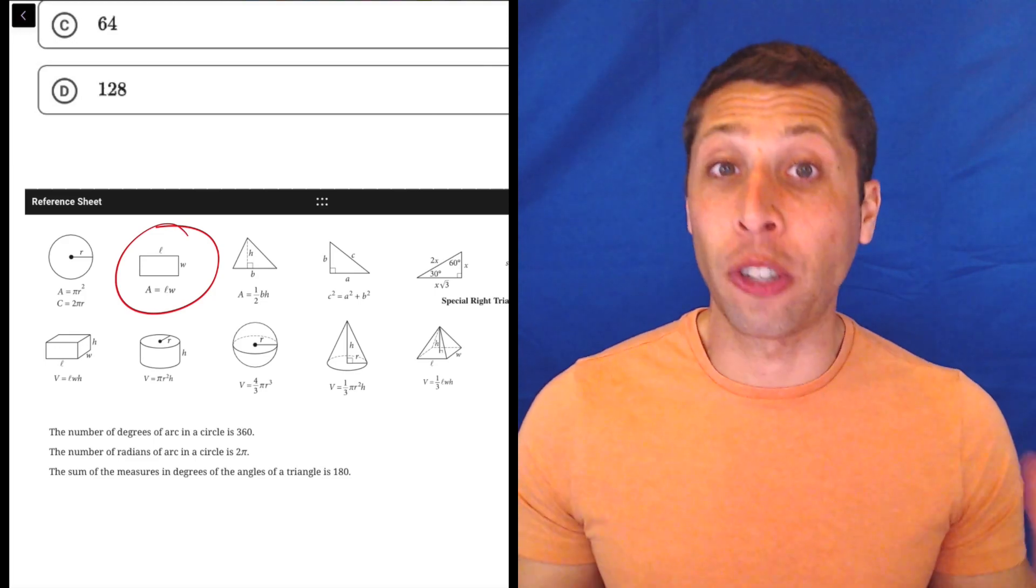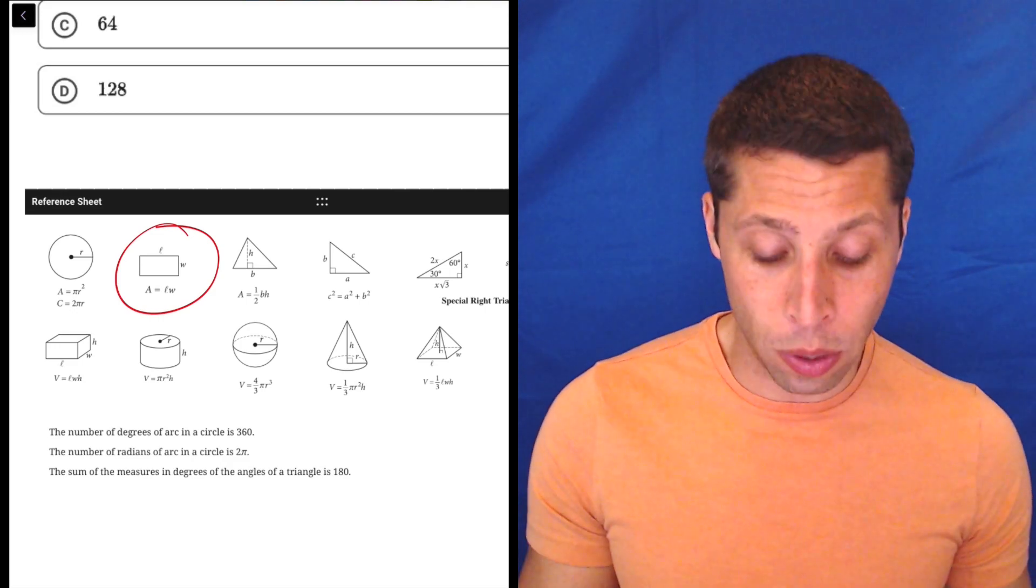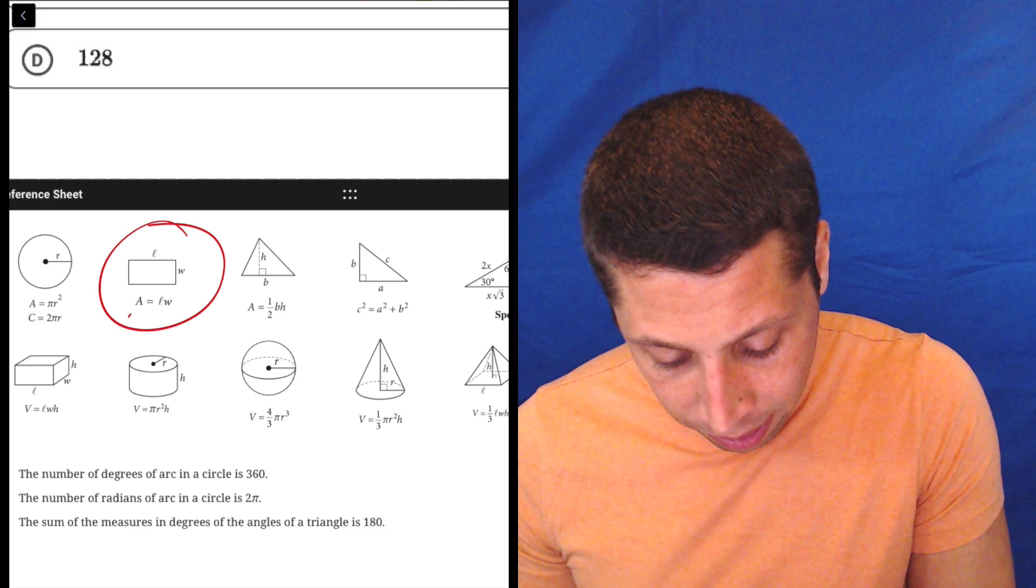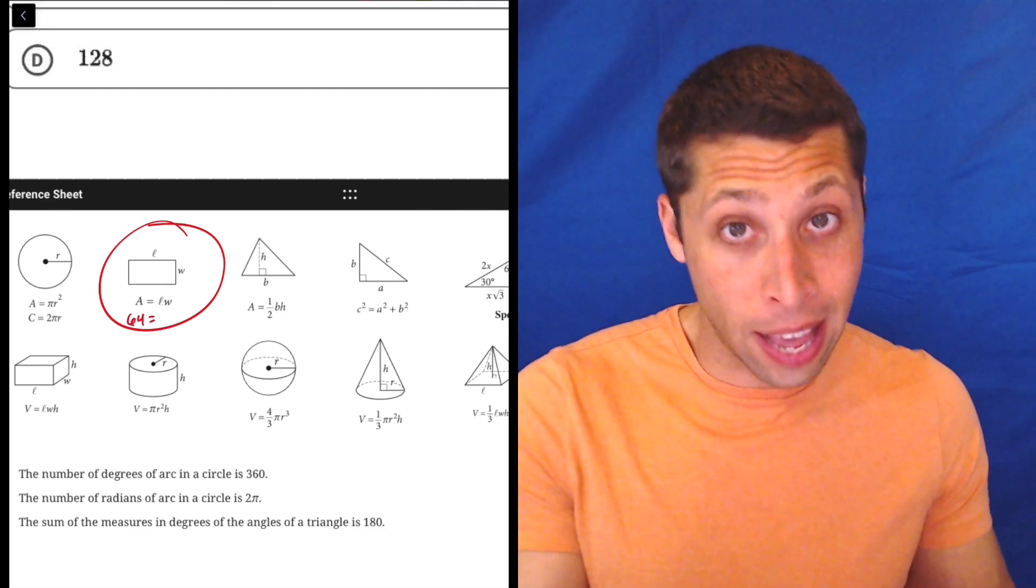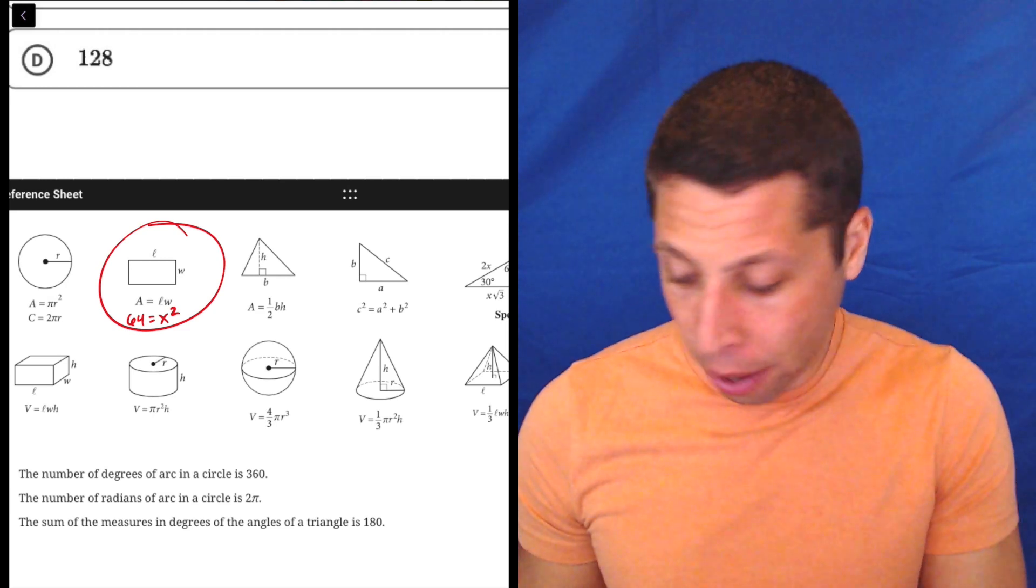So there's no reason to get geometry questions wrong purely from a memorization standpoint—most of the things that you need to know are given. So we could just say, okay, if the area is 64 and the length and the width are the same because it's a square, 64 is x squared.